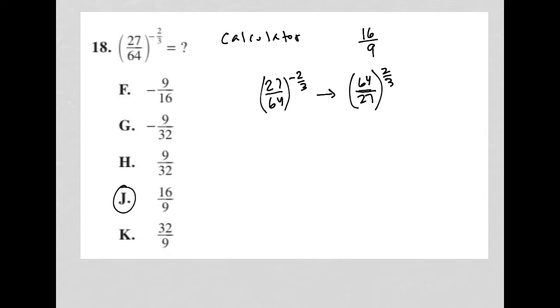Second of all, two-thirds power - before I go there, this two-thirds power is on the outside of the parentheses, which means it impacts both the numerator, so it's 64 to the two-thirds, and the denominator, so 27 to the two-thirds.